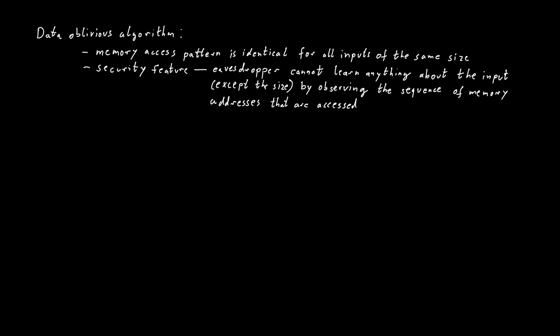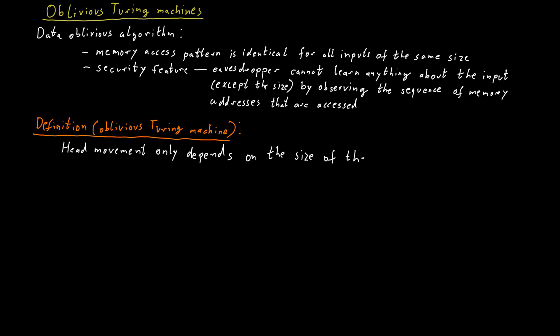For Turing machines, we can define something quite similar and we call this an oblivious Turing machine. An oblivious Turing machine has the property that the head movements of the Turing machine do not depend on the input, but only on the length of the input.